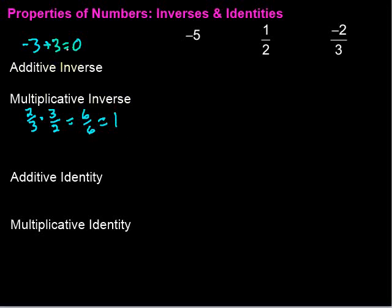So additive inverses, add them, get zero. Multiplicative inverses, we multiply them, and we get one. So let's just look at a few examples here and pick out the additive inverse and the multiplicative inverse of these numbers.